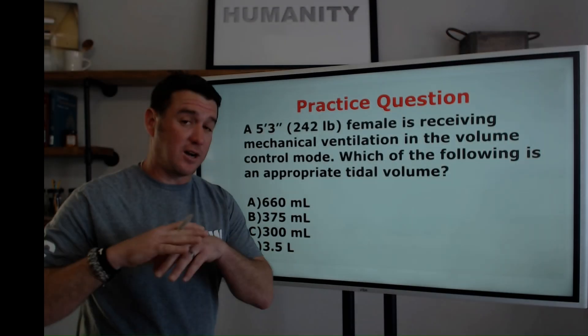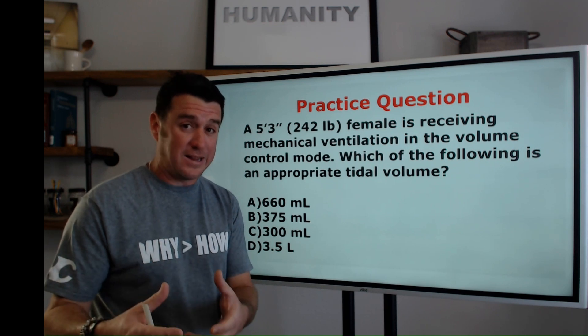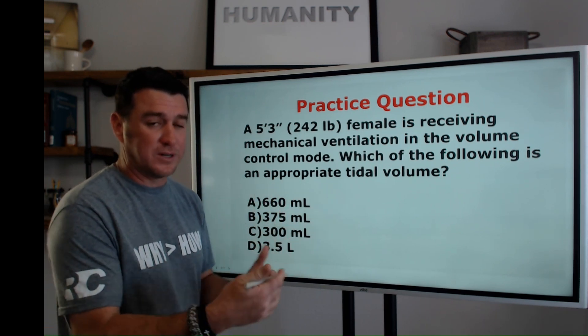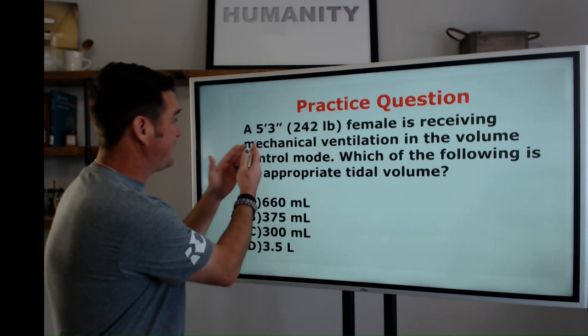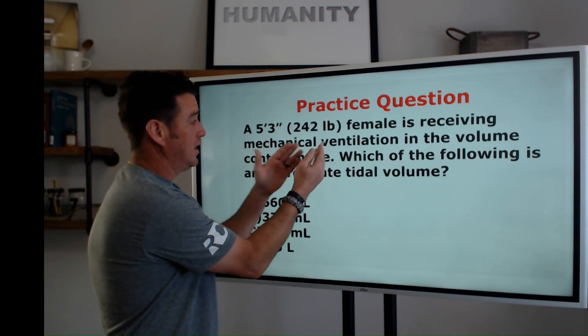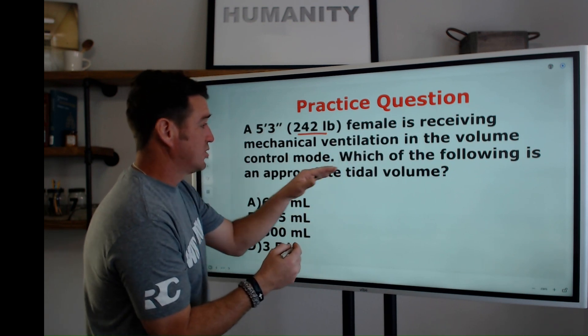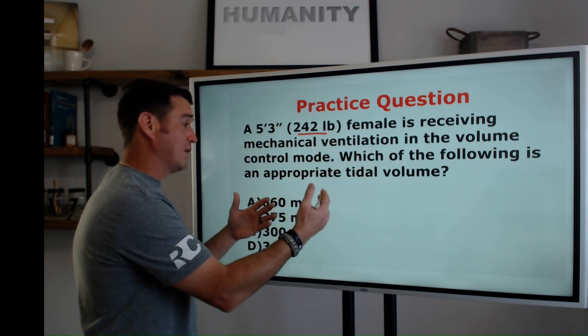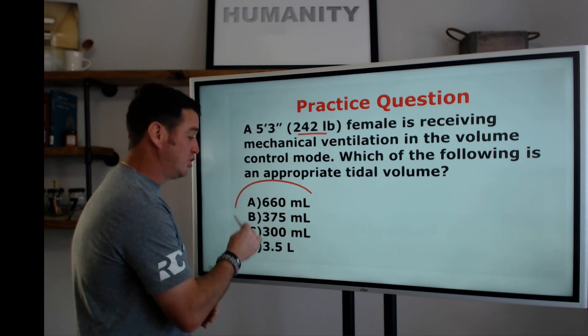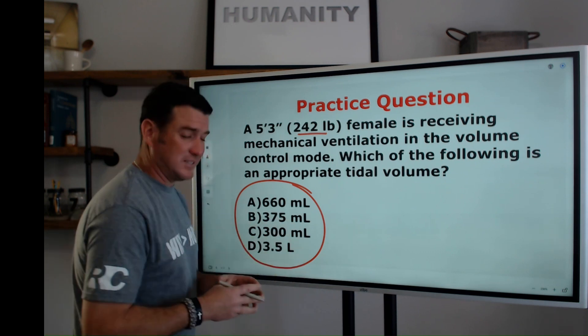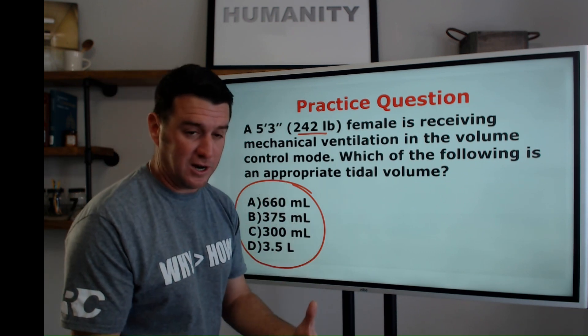We're talking all about predicted body weight. But let's look at a question first so we can understand why predicted body weight is important. We have a 5'3" female, 242 pounds, receiving mechanical ventilation in volume control mode. Which of the following is an appropriate tidal volume for this patient? Choose from these. Now if you want to pause this video right now, choose the best answer. I'm going to keep talking.